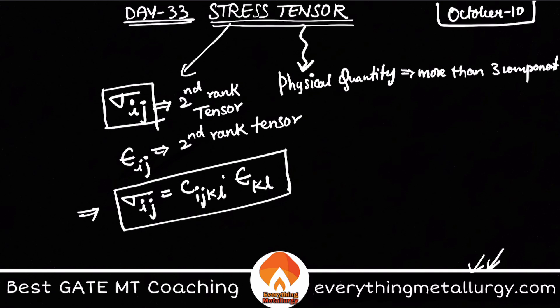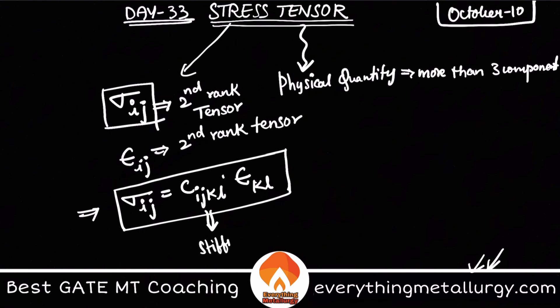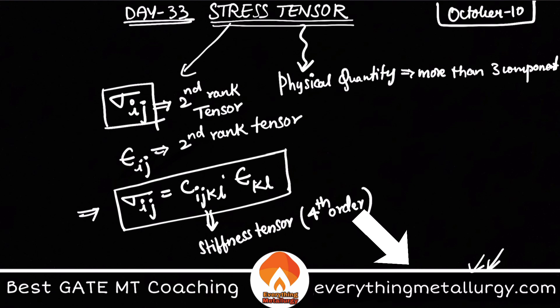Here C i j k l is the stiffness tensor, which is a fourth order tensor. Now, the main thing we are interested in is how many components the stress tensor has.